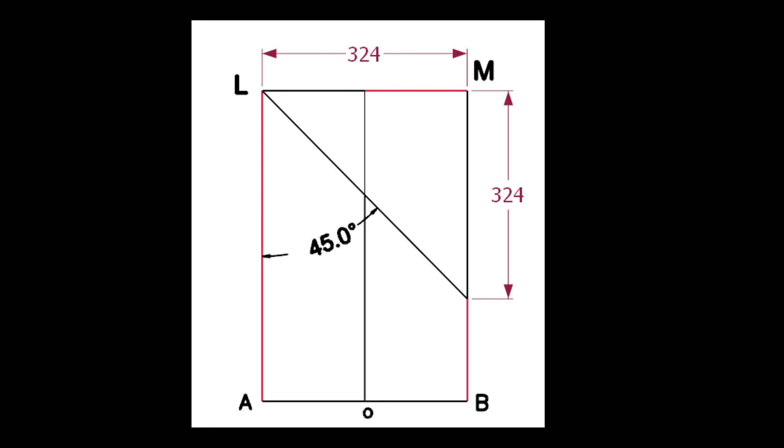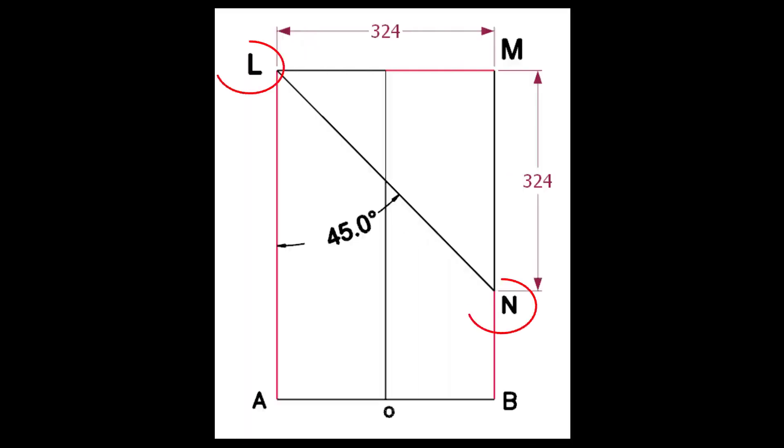Draw the lines AL and BM. Calculate the cutback of the miter. Since the including angle is 45, the cutback is same as the pipe OD. Draw the line LN.